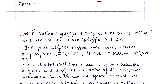The second is a sodium-hydrogen exchanger that pumps sodium ions into the sperm and hydrogen ions out. The third is a phospholipase enzyme that makes inositol triphosphate (IP3), and IP3 is able to release calcium from the endoplasmic reticulum. The elevated calcium level in the cytoplasm releases enzymes and triggers the fusion of the acrosomal membrane with the adjacent cell membrane.